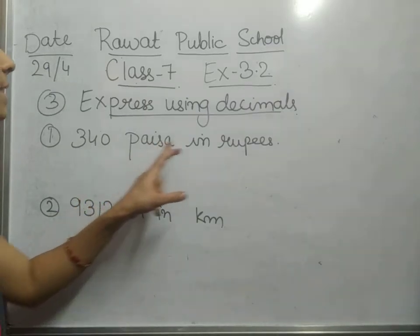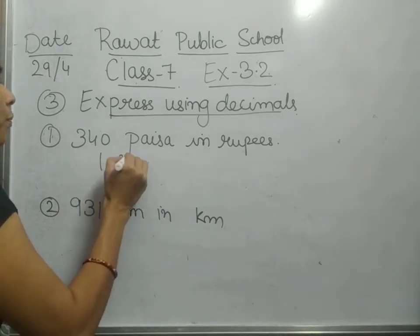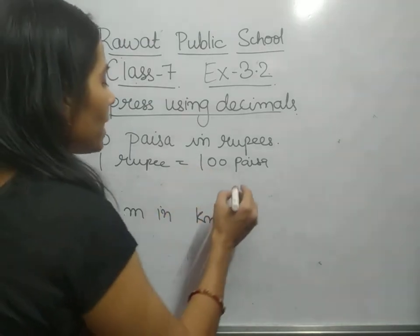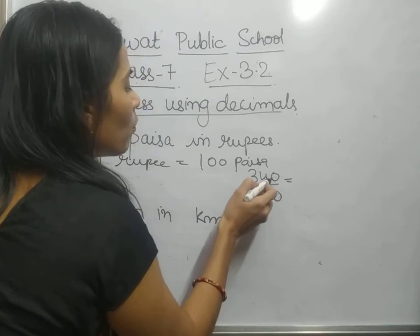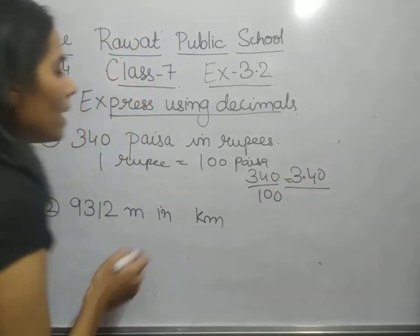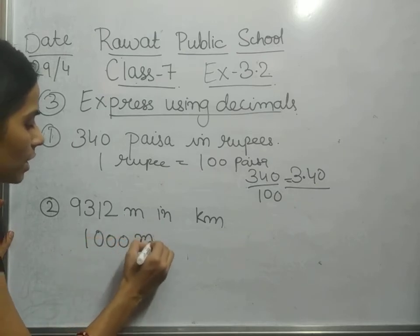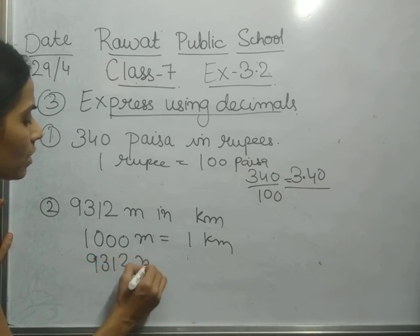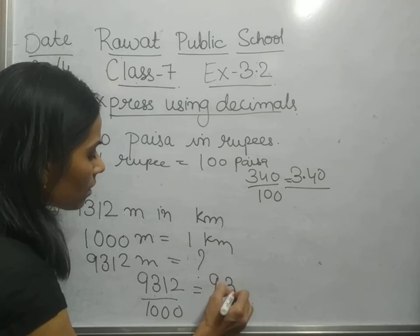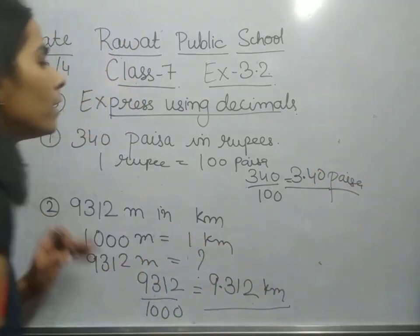Now we have to express these values using decimals. 340 paisa in rupees: we know 1 rupee equals 100 paisa, so we divide 340 by 100, placing the decimal 2 positions to the left, giving 3.40 rupees. In the same way, 9.312 meters in kilometers: since 1000 meters equals 1 kilometer, we divide 9.312 by 1000, giving 0.009312 kilometers. In this way you can do conversions with the help of decimals.